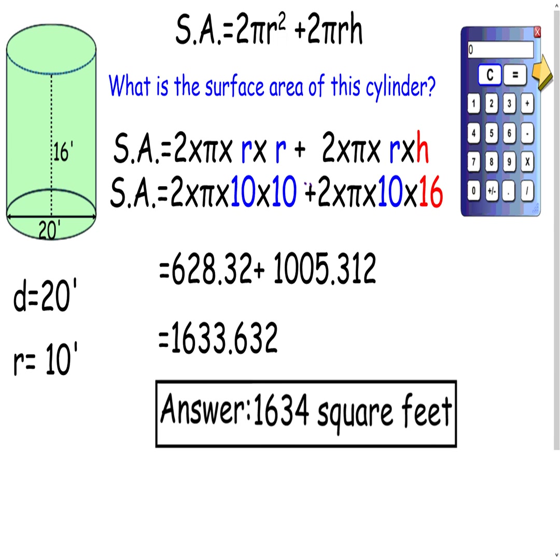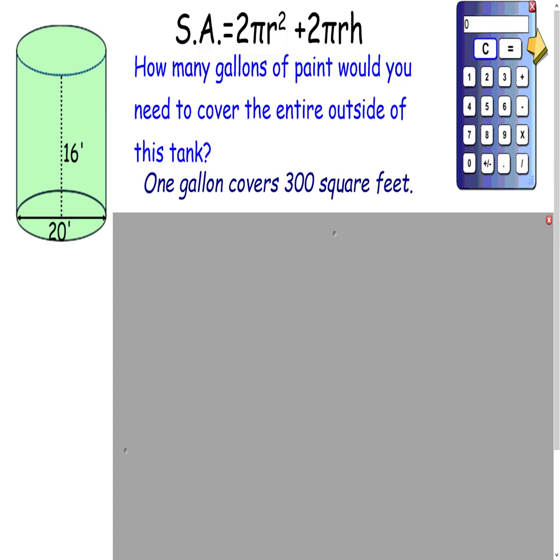Remember, our units are squared. So we take this, and we think, okay, so the next thing is how many gallons of paint would you need to cover this tank? We want to cover the entire tank with paint. So one gallon of paint covers about 300 square feet.